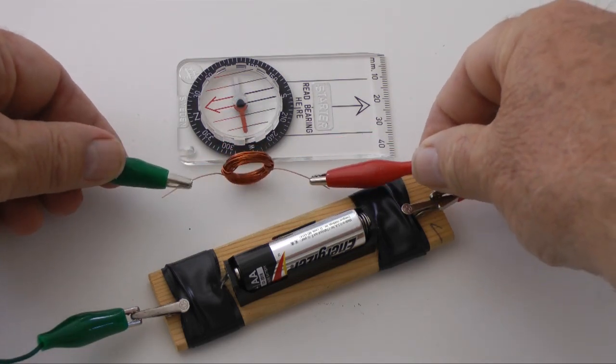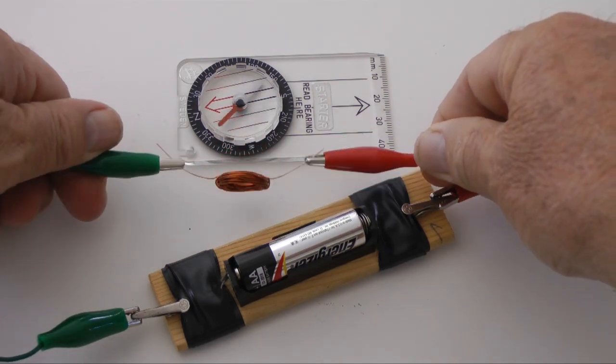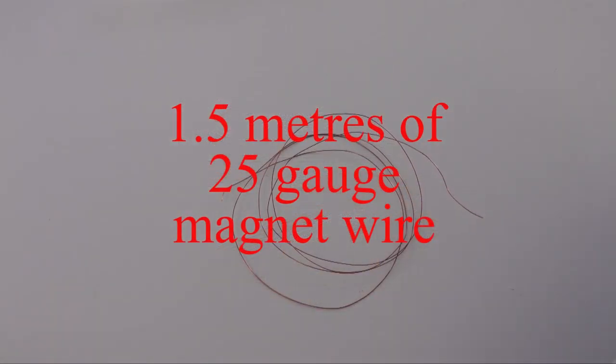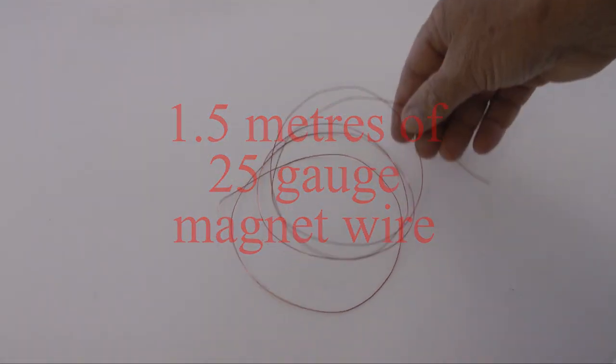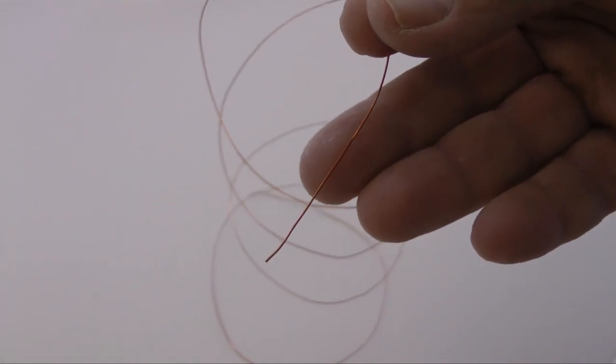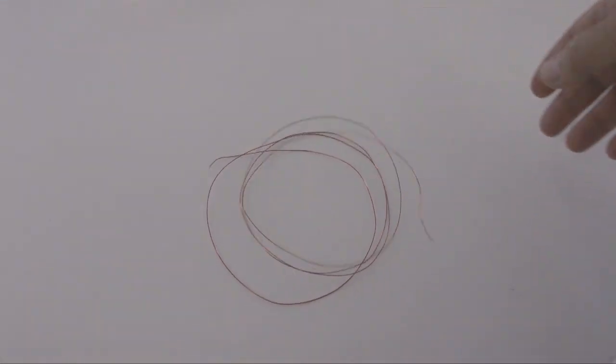Let's start construction of our motor by creating the coil. You will need 1.5 meters of 25 gauge magnet wire. This wire is specially designed for creating motor coils. Other similar gauge insulated wire will work, but this wire is best.